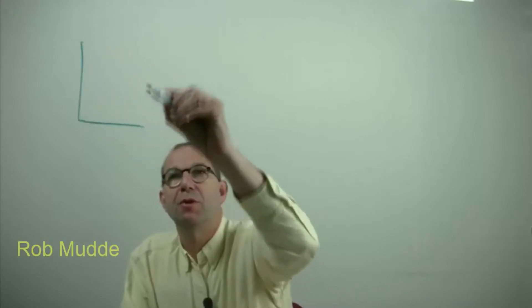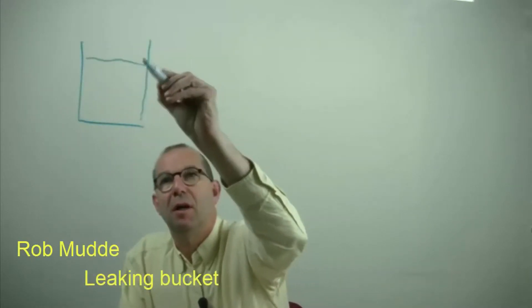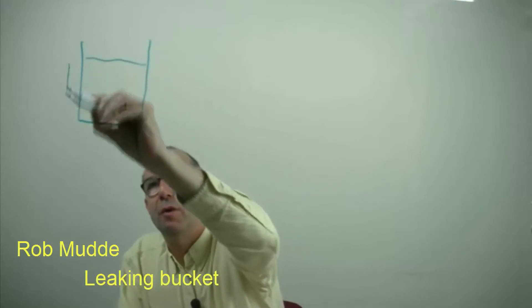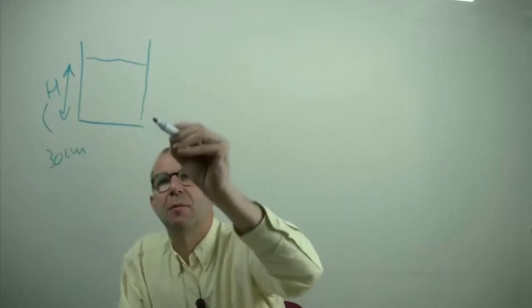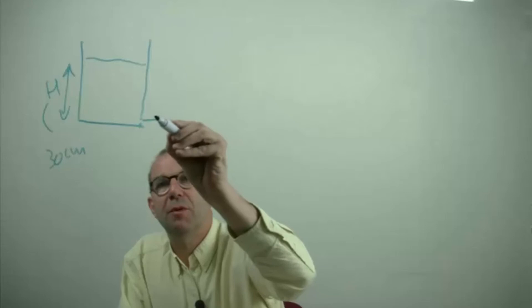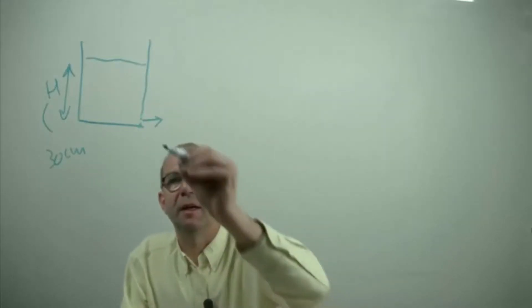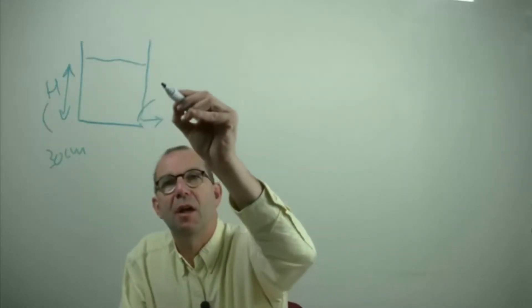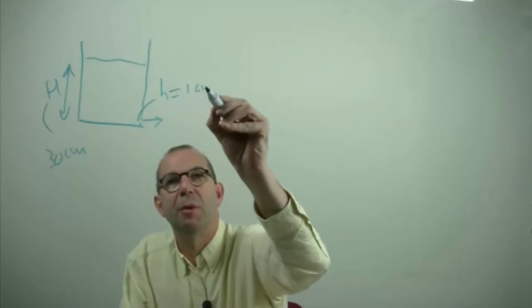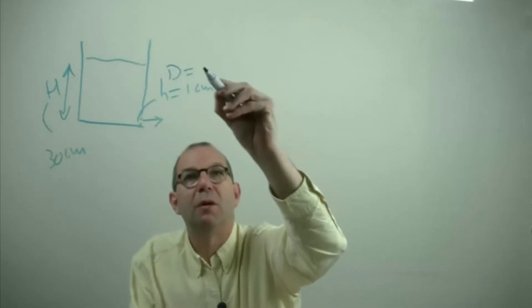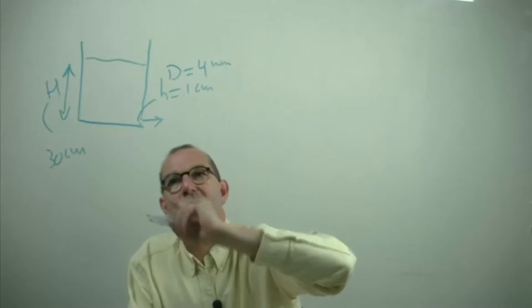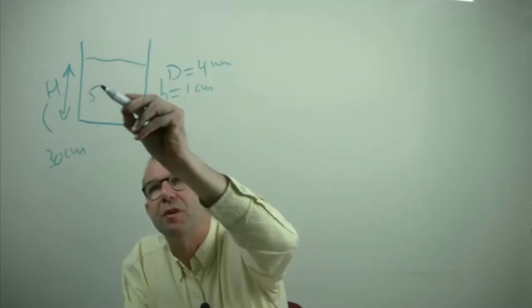Welcome to the glass plate. In today's example we're going to take a look at a bucket that you filled with water up to a height of 30 centimeters. There is a small hole through which water is leaking. That hole is at a height of 1 centimeter above the bottom and it has a diameter of 4 mm. You have tapped 5 liters of water in this bucket.